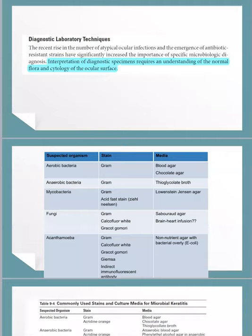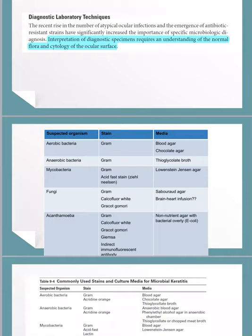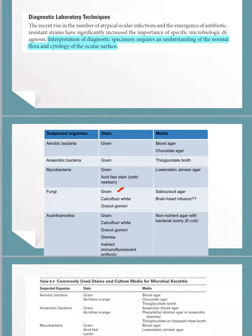Let's go to the diagnostic laboratory techniques, which are extremely important for the basic sciences exam and clinical exam. Regarding stains: for aerobic and anaerobic bacteria, we use Gram stain. For mycobacteria, we use acid-fast stains like Ziehl-Neelsen stain. For fungi, we use Gram stain, as well as calcofluor white and Grocott-Gomori methenamine silver stains, which are also important for Acanthamoeba together with Giemsa stain and indirect immunofluorescent antibody.